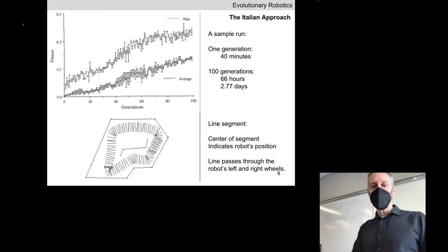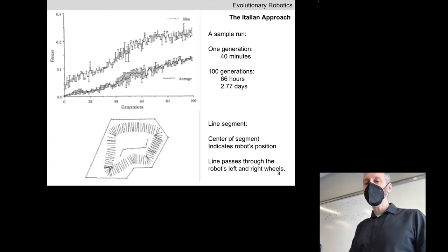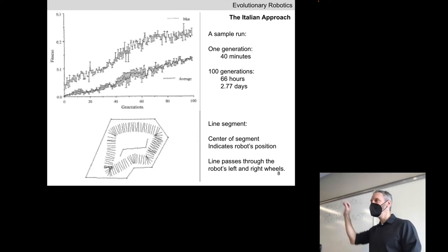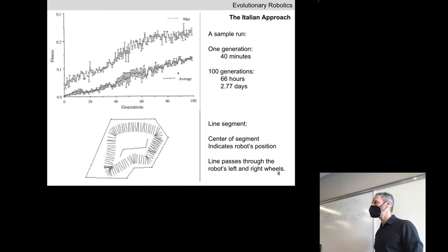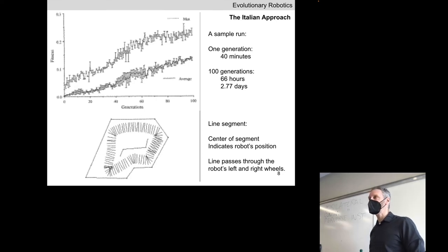After three days they had the upper fitness curve, showing the phi value achieved by the best neural network in the population, and the lower curve reporting the average phi across the population during each generation. There was more or less steady progress, and you can see that if the investigators had had more stamina and kept going, evolution probably would have found better solutions.